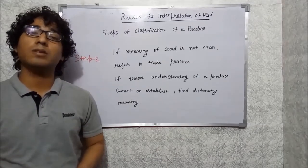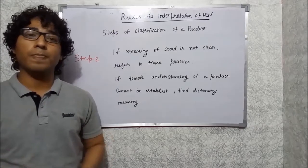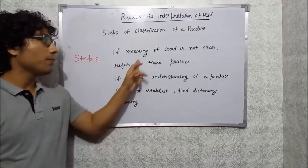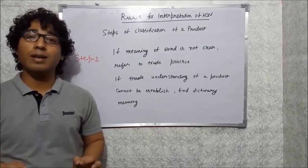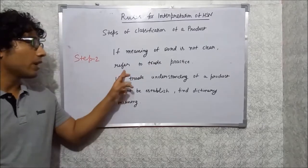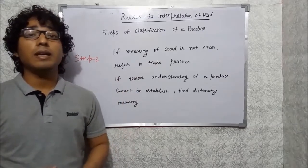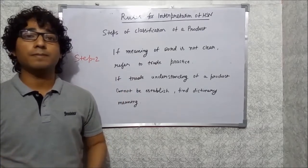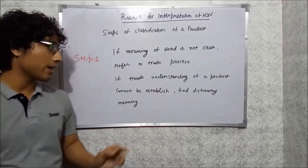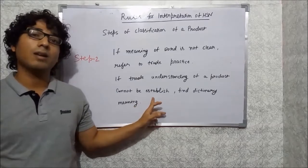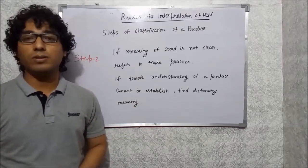If you cannot classify the goods on the basis of Rule 1, then apply Rule 2. Rule 2 says that if the meaning of the word used to describe the product is not clear, then refer to trade practice — what that goods is called by the general public. And if the trade understanding of a product cannot be established, then find the technical and dictionary meaning of that particular goods.